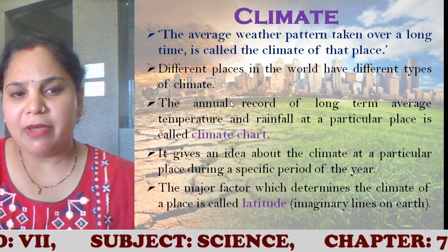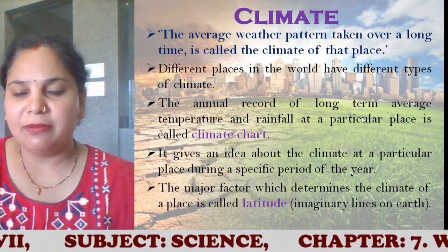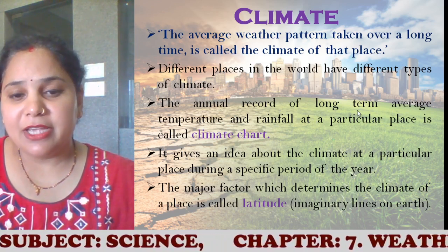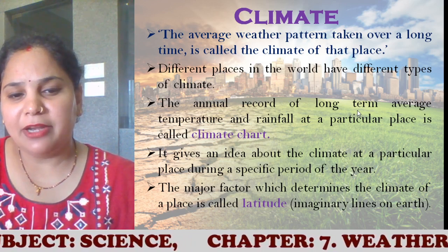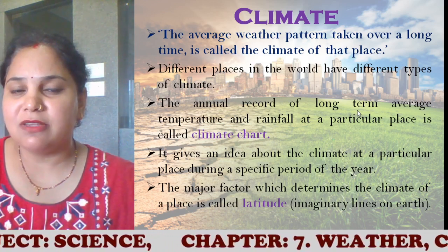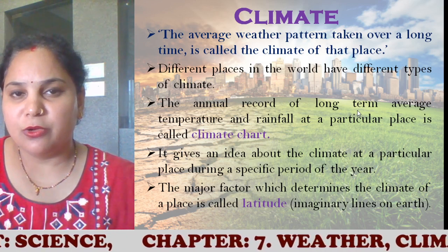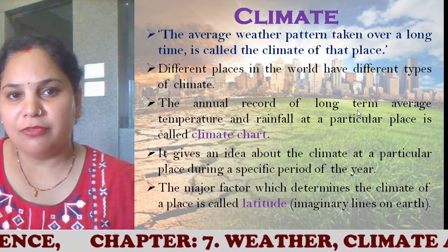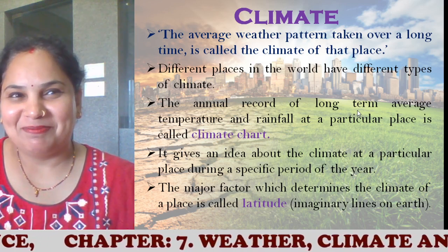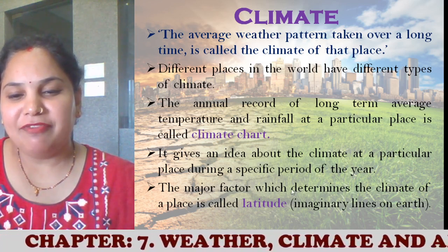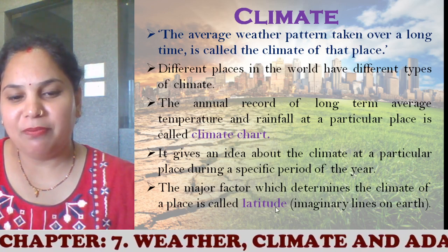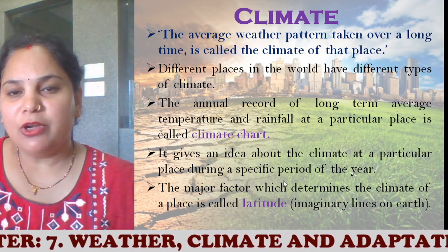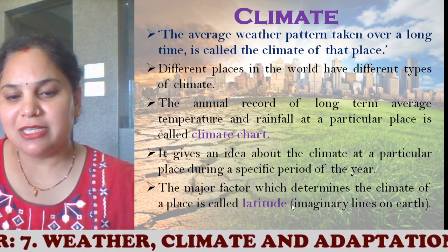The annual record of long-term average temperature and rainfall at a particular place is called a climate chart. It gives an idea about the climate at a particular place during a specific period of the year. So if we plan to move to some place, we should look at the climate. The major factor which determines the climate of a place is latitude — imaginary lines on the earth.